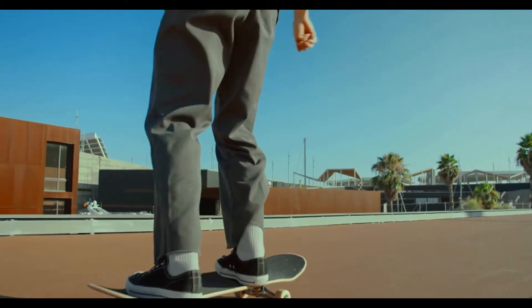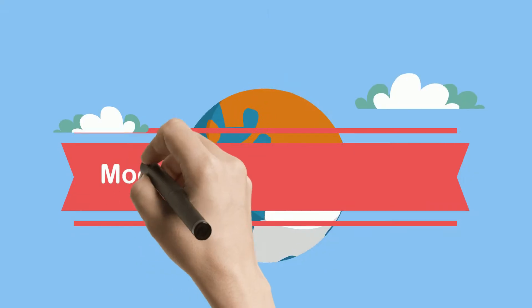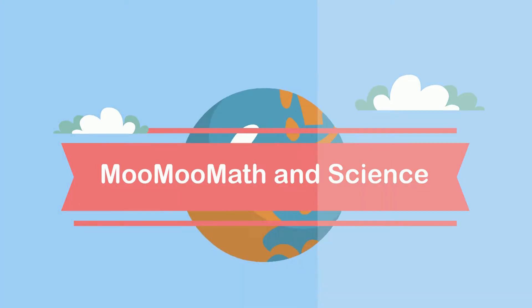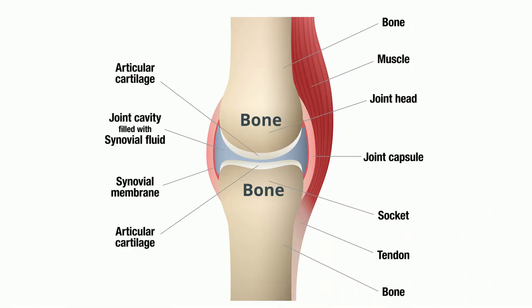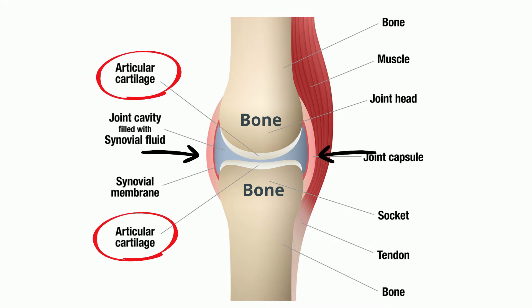Welcome to MooMoo Math in Science and Synovial Joints. Joints are where bones come together. A synovial joint is unique because the bones have cartilage at the end and they are attached by ligaments. There's also a space in between the two bones filled with a fluid called synovial fluid, and this acts as a cushioning agent.